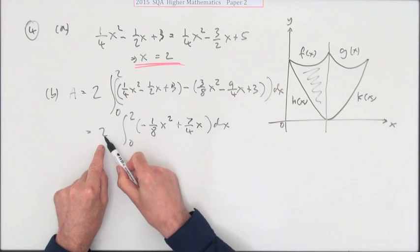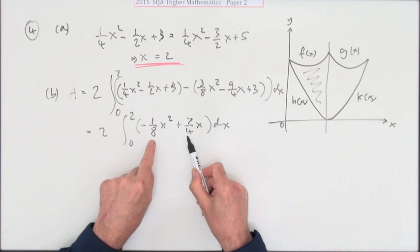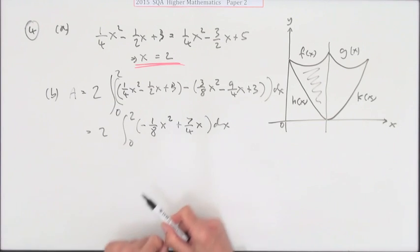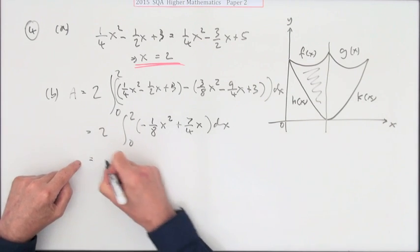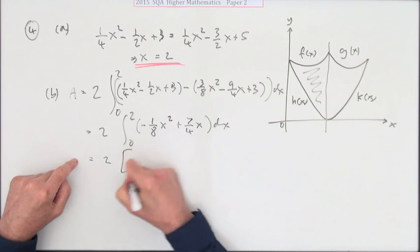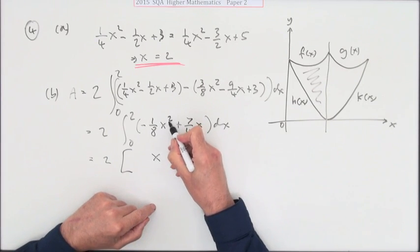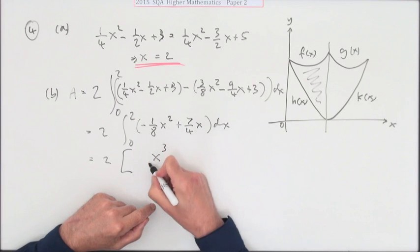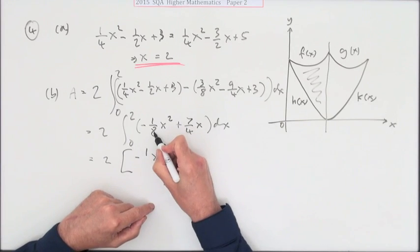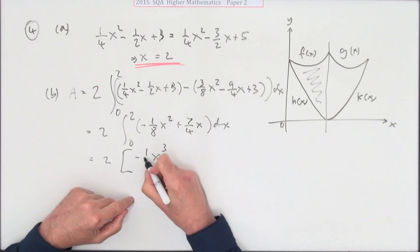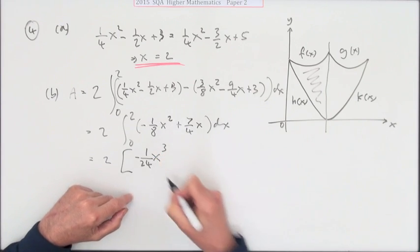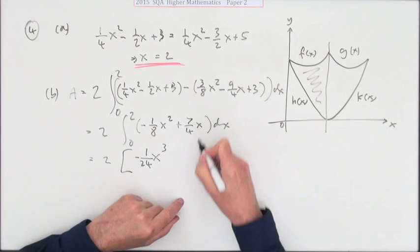You could put that 2 inside to make those fractions less daunting, but I'll leave it outside. So 2 times, now we integrate. Lifting the power to 3 means you divide by 3, so you've got 8 and 3 underneath—that's 1/24.